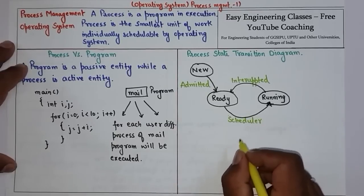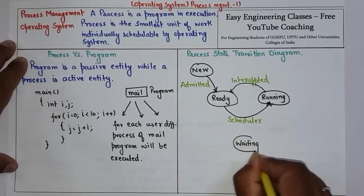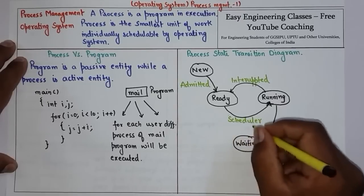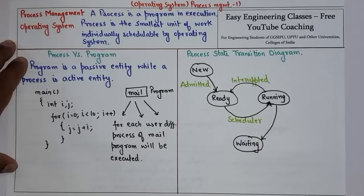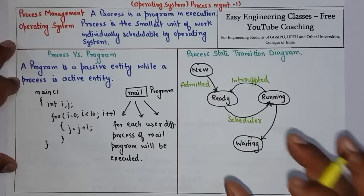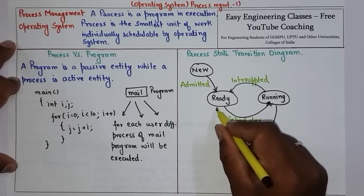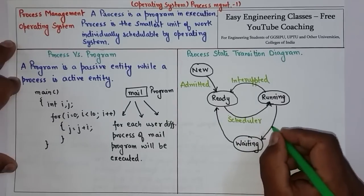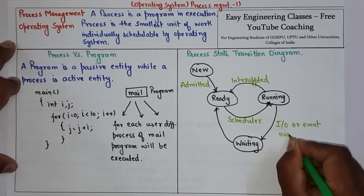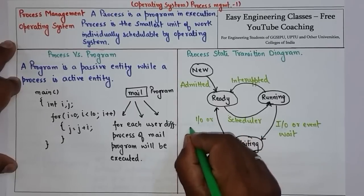From running, the process can also enter the waiting state, where a process is still running but waiting for some resources. The process goes to the waiting state, and on completion of the waiting task — for example, if a process is waiting for an IO device like a printer to be available and the printer becomes available — the process goes again into the ready state. The transition from running to waiting is labeled IO or event wait, and from waiting back to ready it is IO or event completed.